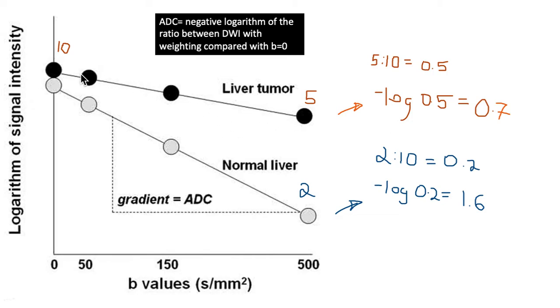We plot the signal of a liver tumor and compare the ratio between the signal created with provision of weighting, in this case a B value of 500, and compare that with the B value of 0 or without weighting.